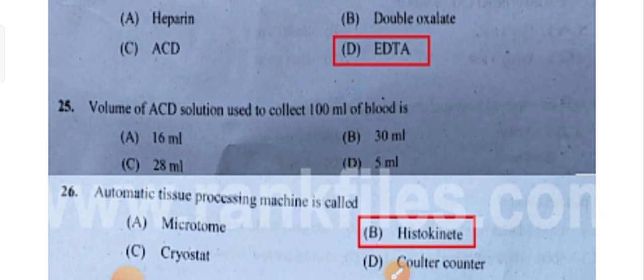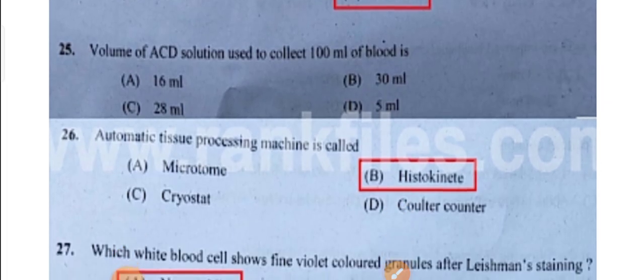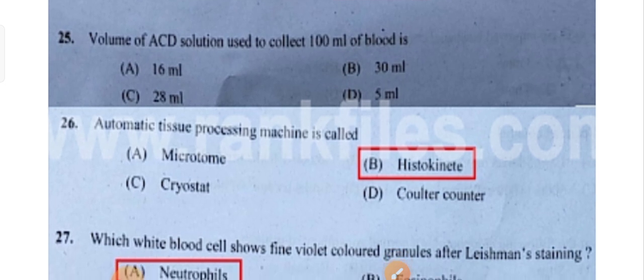Volume of ACD solution used to collect 100 mL of blood is — please drop your answer. The automatic tissue processing machine is called Histokinette. Option B is the correct answer.